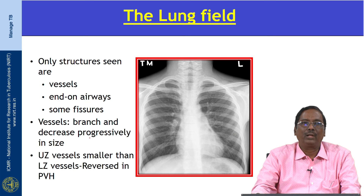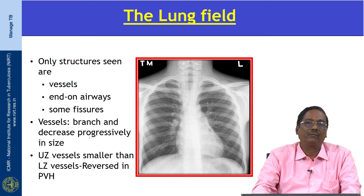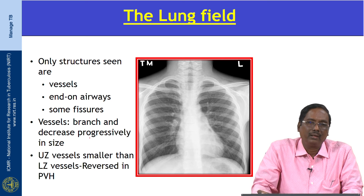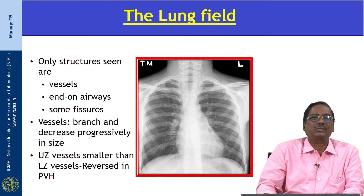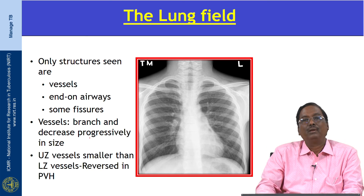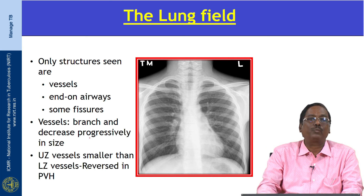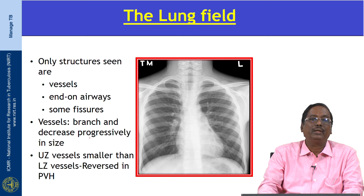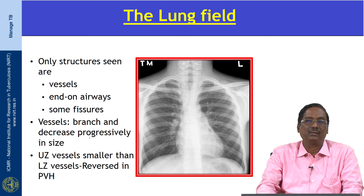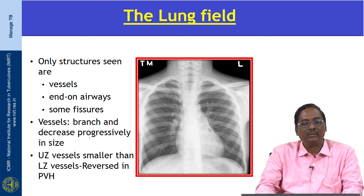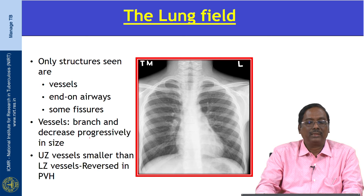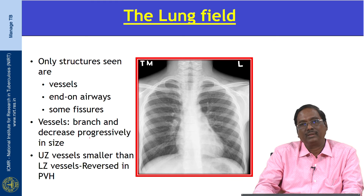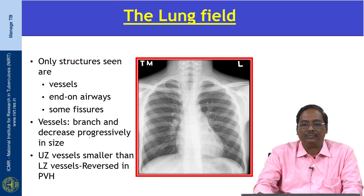In the lung fields, the only structures seen are vessels end-on, airways, and some fissures. Vessels branch and decrease progressively in size. Upper zone vessels are smaller than lower zone vessels, but this is reversed in pulmonary vascular hypertension.